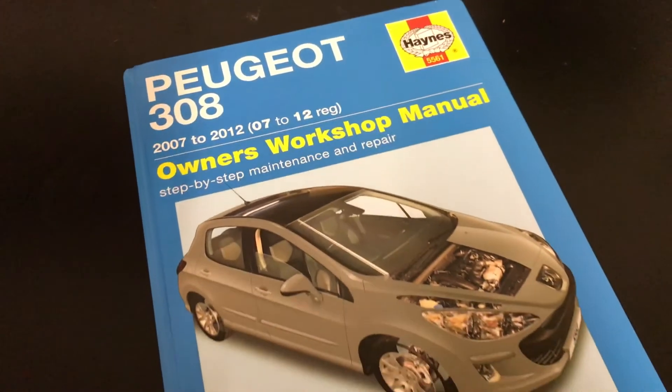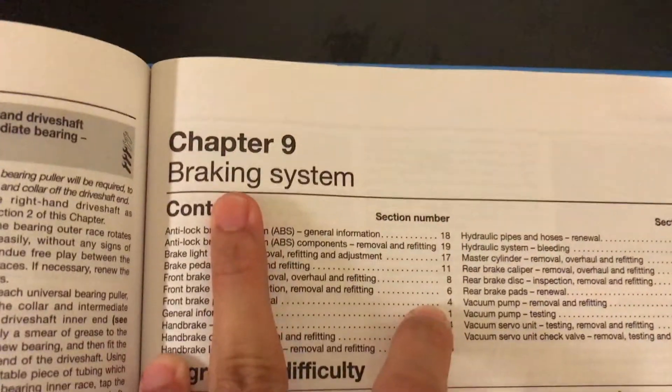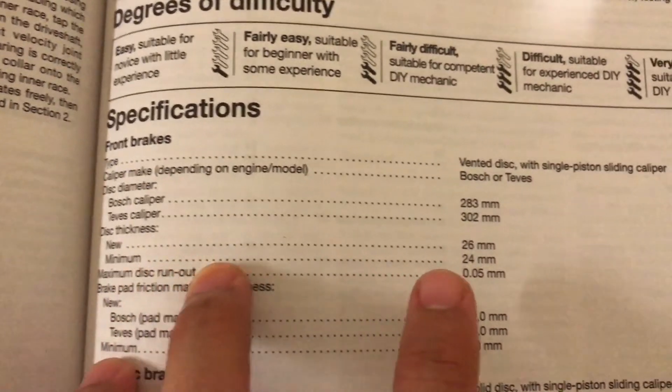I bought a Haynes manual for a Peugeot 308, which is the closest model I could find to my 408. Inside, you'll find the specifications for the minimum thickness of the disc brakes.